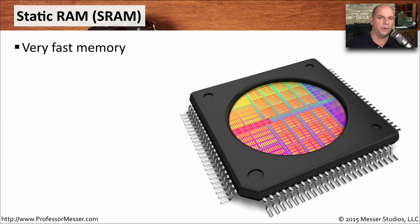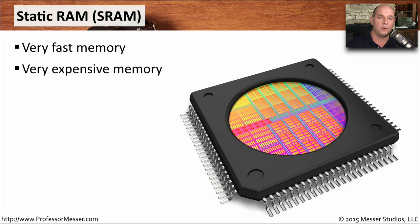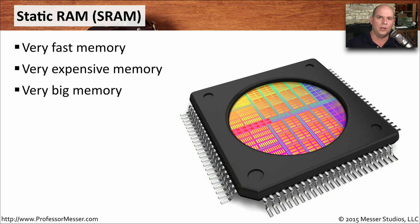There's a very specialized kind of RAM inside of your computer called static RAM, abbreviated as SRAM. This is very fast memory used for some very specific purposes inside of your computer. Because it is so fast, it's also much more expensive than the traditional random access memory used on the memory sticks inside of our computer. It's also relatively large, so it takes up a lot of real estate inside of your computer relative to the other memory types.